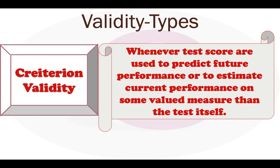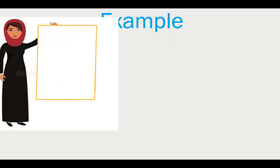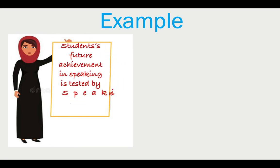Whenever test scores are used to predict future performance or to estimate current performance, we are concerned with evaluating the relationship between the test and the criterion. For example, a speaking readiness test score might be used to predict a student's future achievement in speaking.